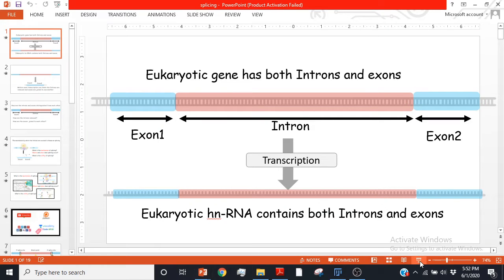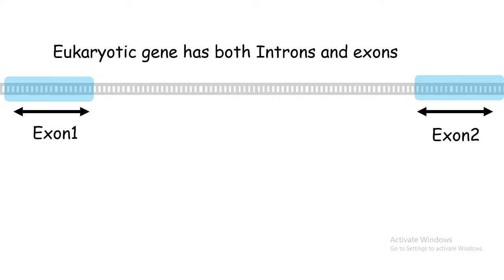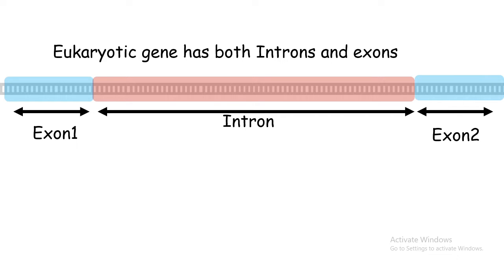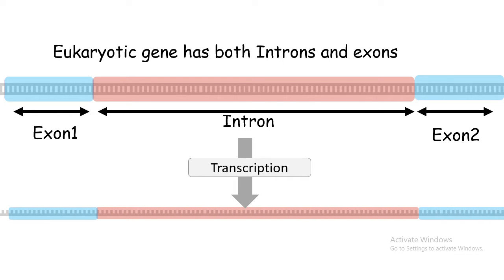Hi everyone, in this video we're going to talk about the splicing process. We know in case of eukaryotic genes we have introns and exons. The exons are shorter whereas the introns are the intervening sequences between two exons and they are bigger in size. When eukaryotes transcribe their genes to mRNA, the mRNA contains sequences corresponding to both introns and exons.